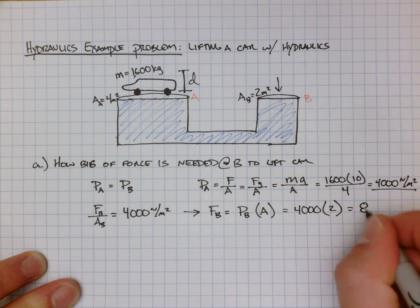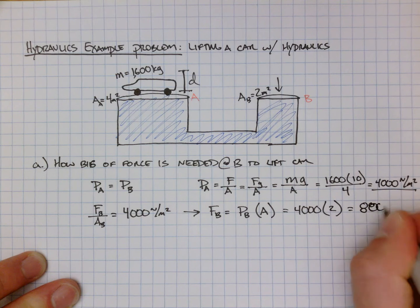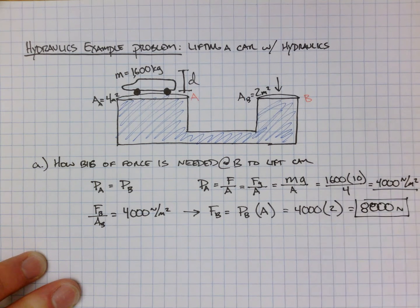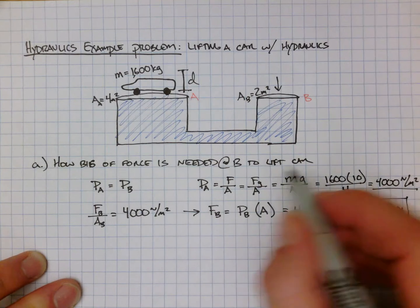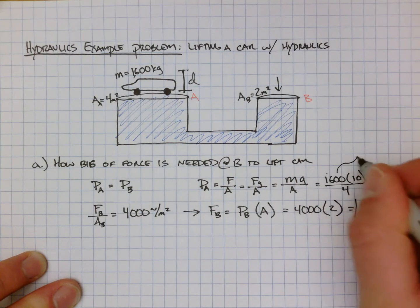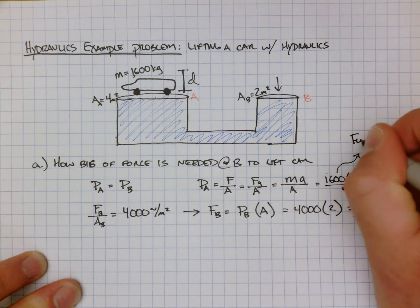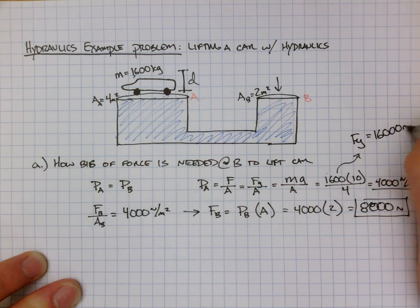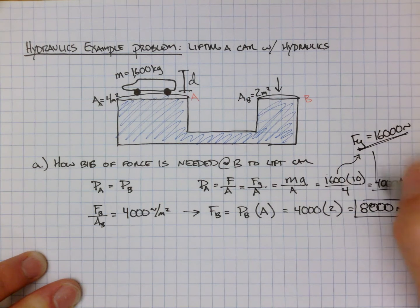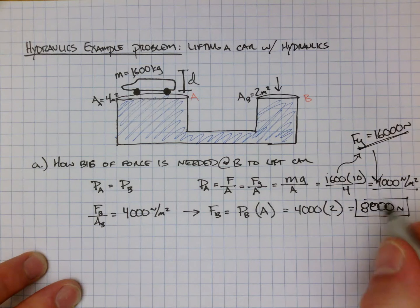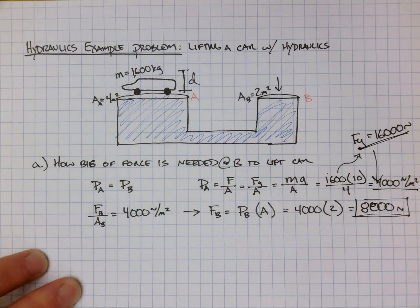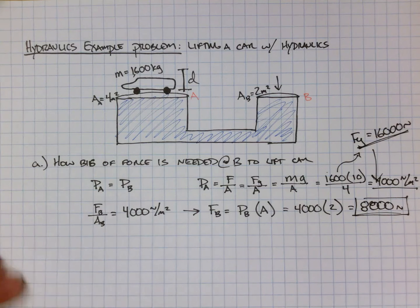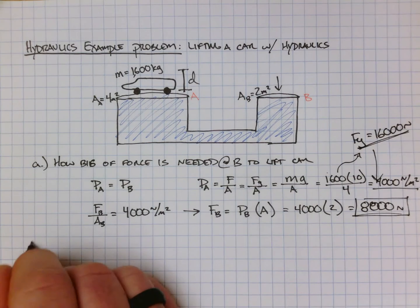The force needed to lift the car is 8000 newtons, whereas the force of gravity on the car itself is 16,000 newtons. So by using this hydraulic system, we've essentially decreased the force needed to lift the car by half — that's a great benefit.